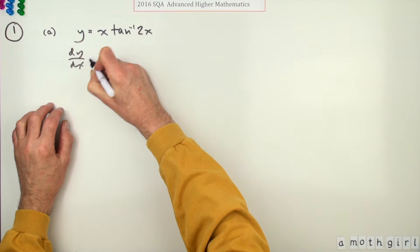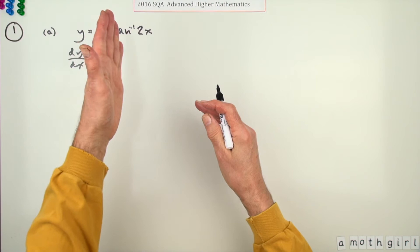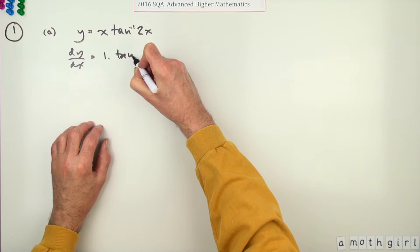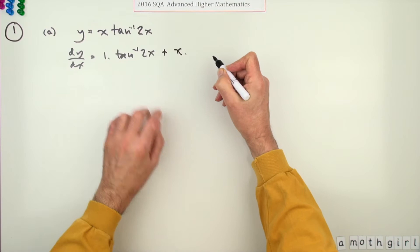Well, dy/dx equals, and it's a product so it's just the case of differentiate one, leave the other, switch over. So differentiating the x is just one, leave the inverse tan of 2x alone.